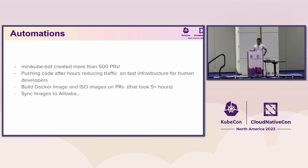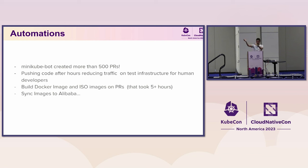In 2021 we created automations for everything we could delegate to a machine. Today, Minikube bots have created more than 500 PRs. Tasks that used to require manual work — like building an ISO or image that takes three or four hours — are now automated to run at midnight while we sleep. The tests run on them overnight and by 8 a.m. we're ready to merge.